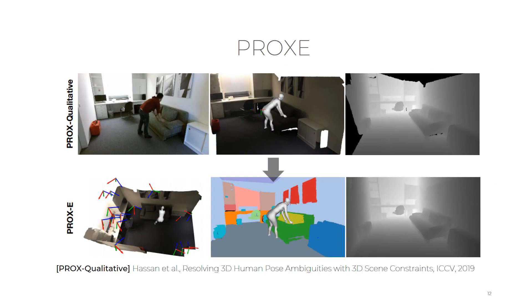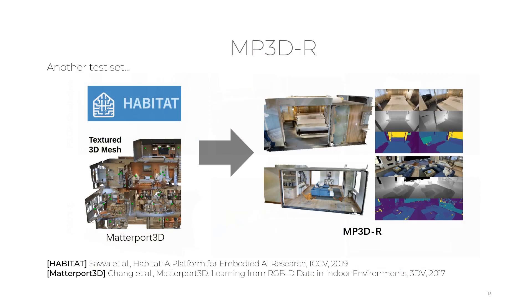To train and test our generative model, we expand the PROX dataset with virtual walls, virtual cameras, and mesh semantics. With the virtual walls, we can always obtain complete depth maps for any virtual camera inside the room. We follow the Matterport 3D semantics and annotate scene mesh vertices by hand. We also use the Habitat simulator to cruise in Matterport 3D meshes to create another test set. Our trained models can thus work directly in Matterport 3D scenes as the scene semantics are the same.